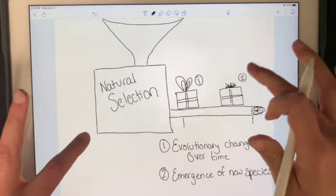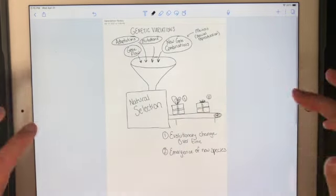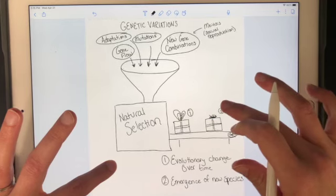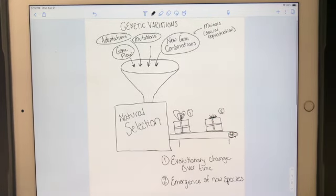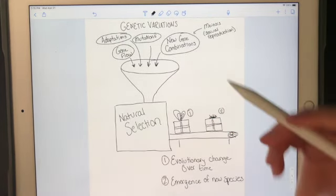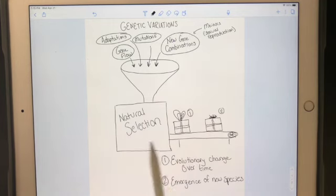So if we wanted a bigger view, here we go. We have genetic variations being acted upon by natural selection, which results in perhaps we have evolutionary change over time, or maybe we even have new species developing.